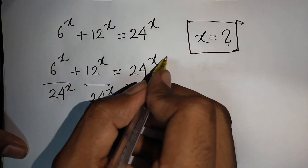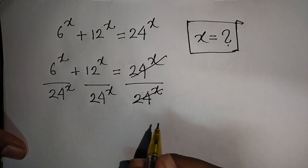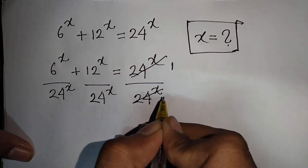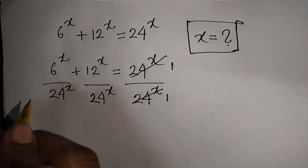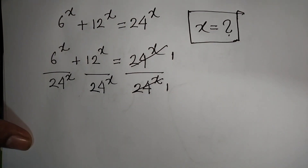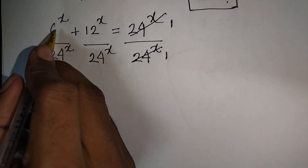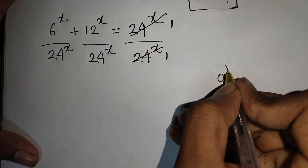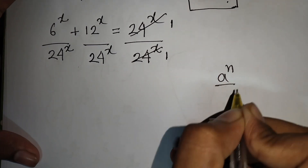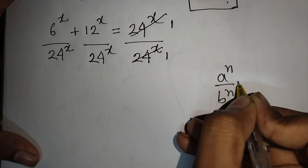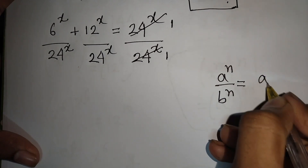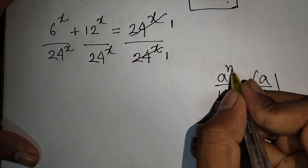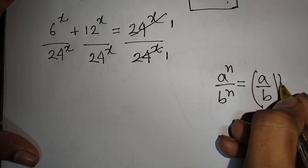The 24 to the power x terms cancel. Now, since the exponent x is the same but the bases are different, we remember the formula: a to the power n over b to the power n is equal to (a over b) to the power n.